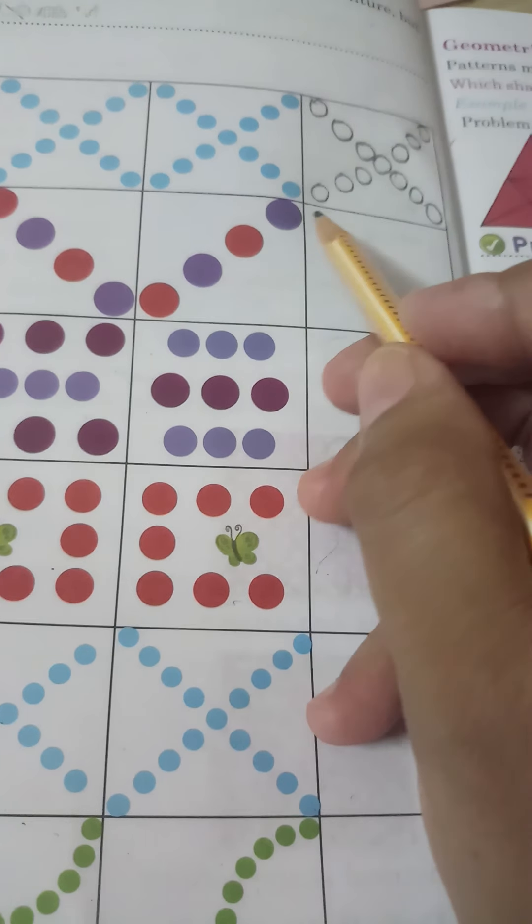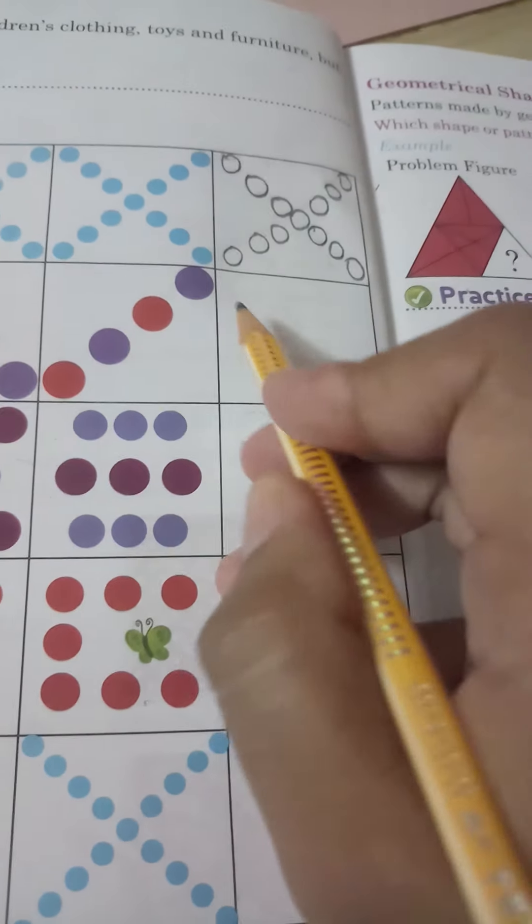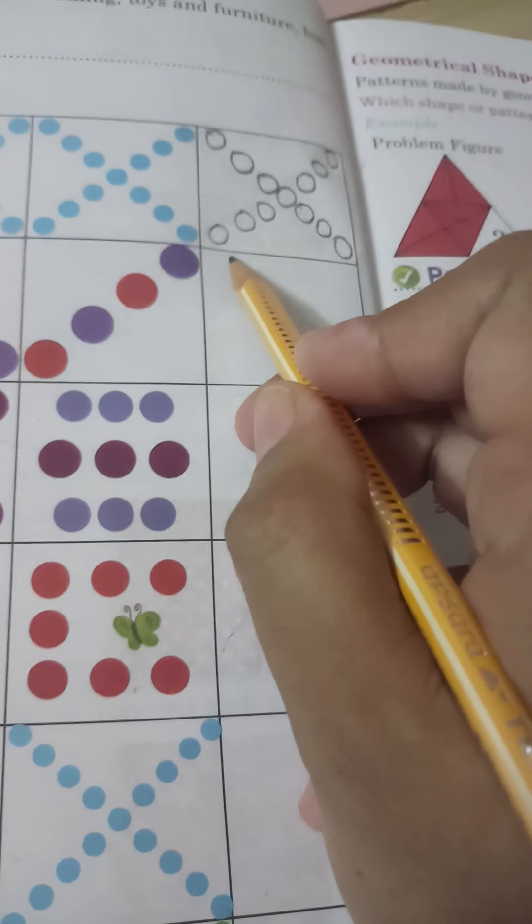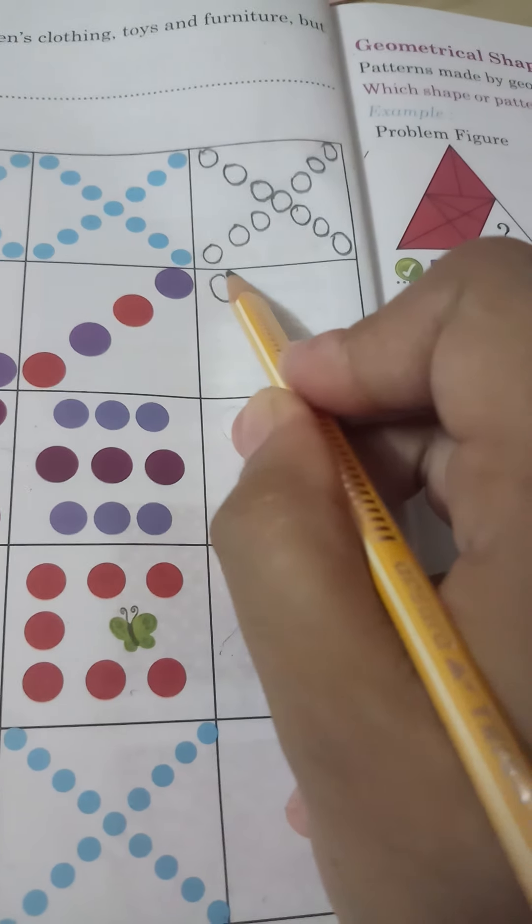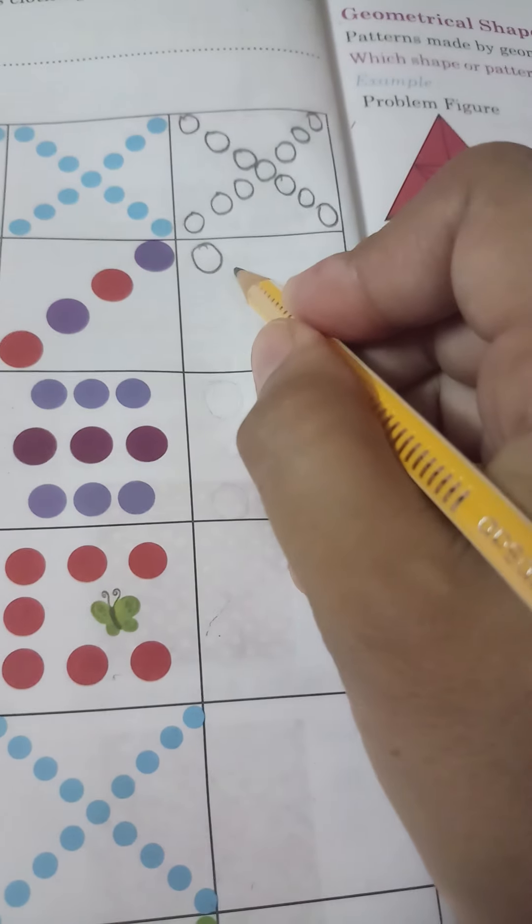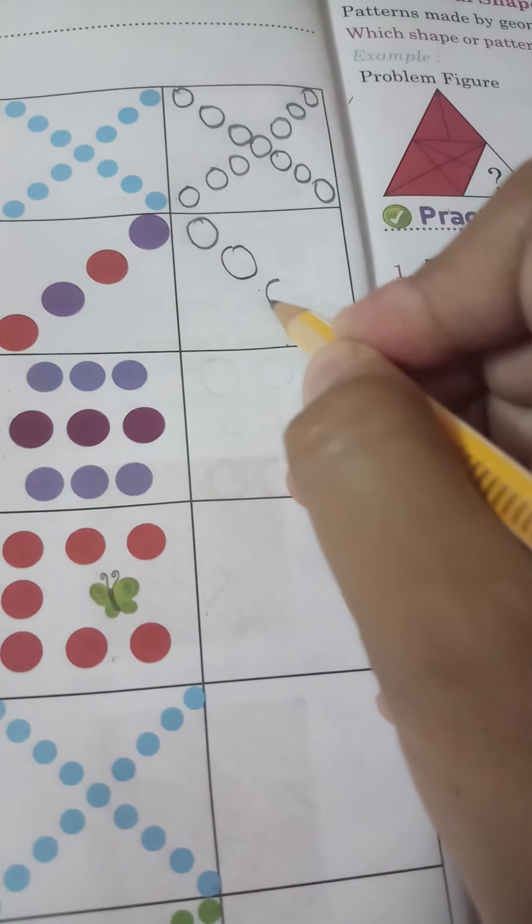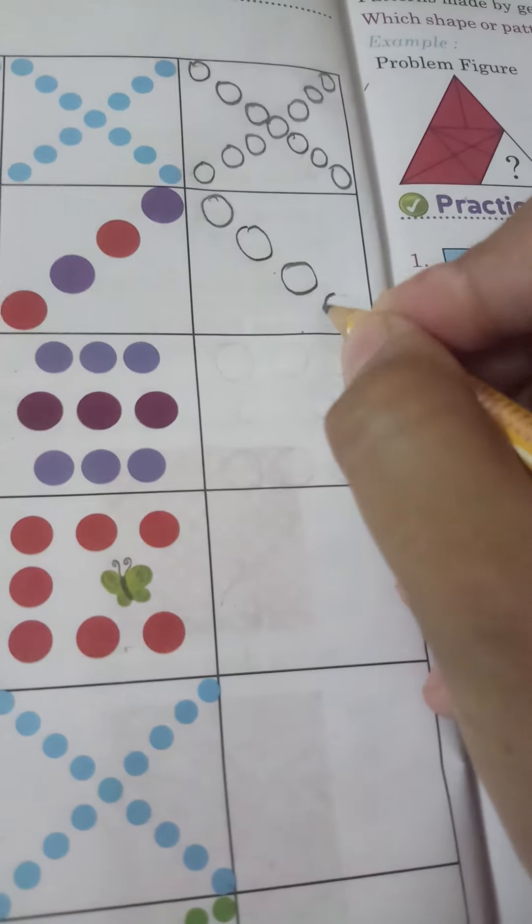We will complete here up to down. Here are 1, 2, 3, 4 dots. We will make here 4 dots: 1, 2, 3, 4.